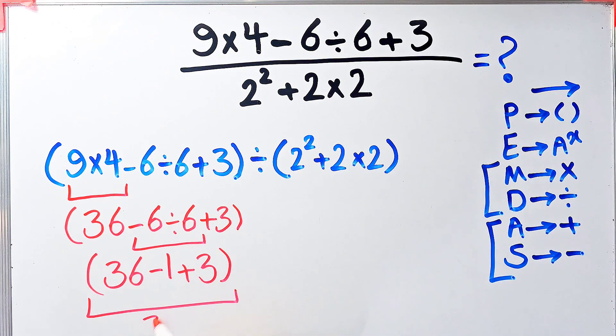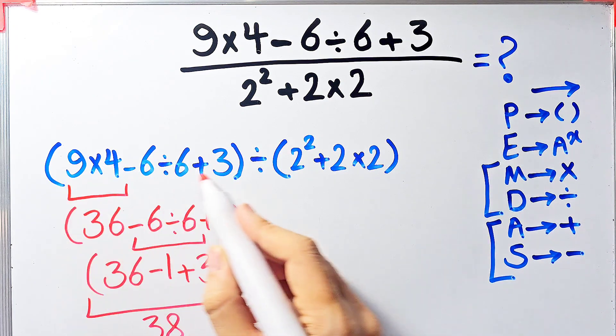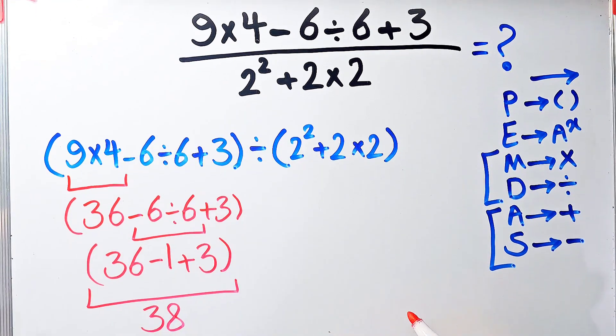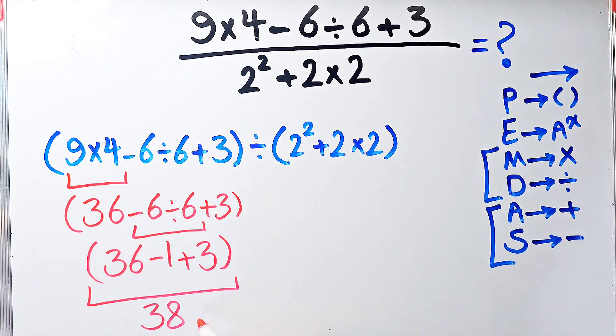The final answer of these parentheses equals 38. Now we have 38 divided by the expression 2 to the power of 2 plus 2, then times 2.